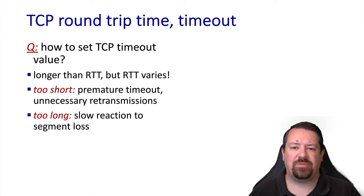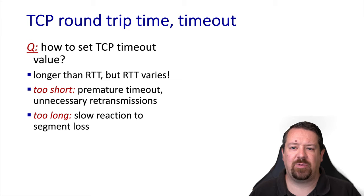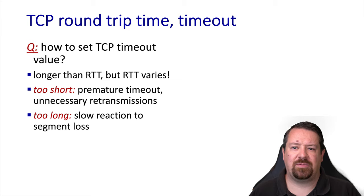When we were describing reliable data transfer, we saw the use of timeouts, and we said that later on we would understand how to set these timeout values. The timeout value needs to be set relative to the round-trip time, ideally expiring just a little more than one round-trip time after the expected arrival of the acknowledgement. However, if we set the timeout too short, the sender will frequently retransmit data unnecessarily. On the other hand, if the timeout is too long, the sender will frequently be stuck waiting, unable to send more data while waiting for the timeout to expire. Both options would cause inefficiency.